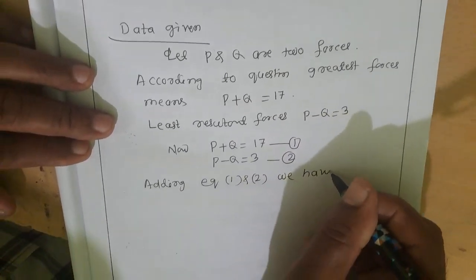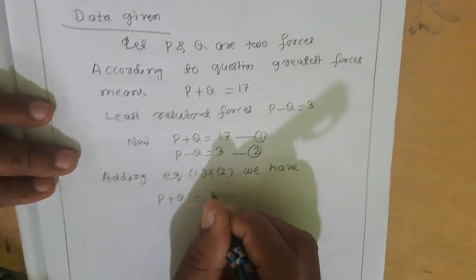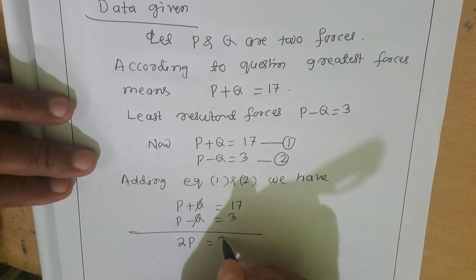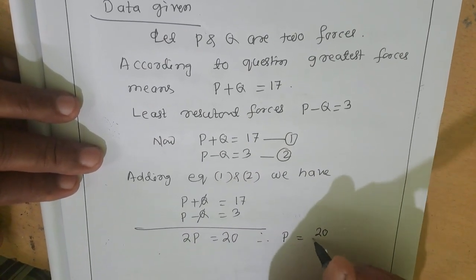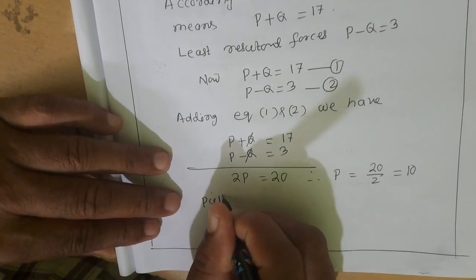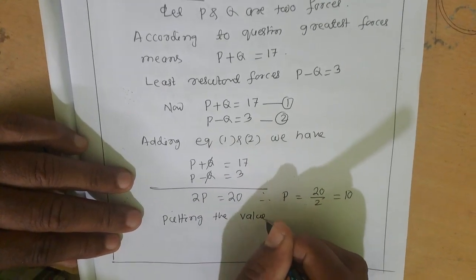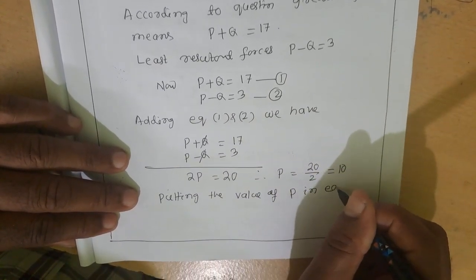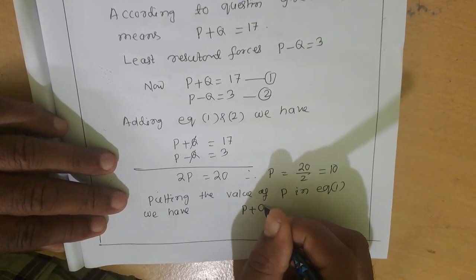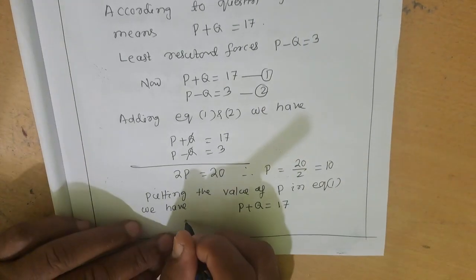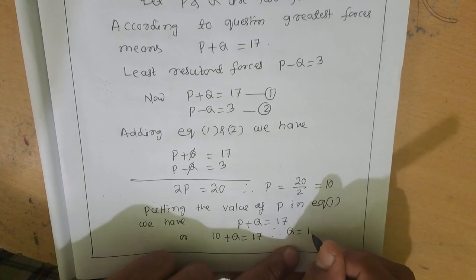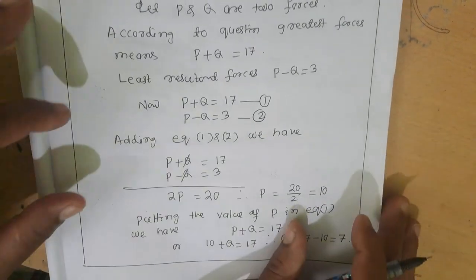Adding equation 1 (P + Q = 17) and equation 2 (P − Q = 3): the Q terms cancel, giving 2P = 20, therefore P = 20/2 = 10. Putting the value of P into equation 1: 10 + Q = 17, therefore Q = 17 − 10 = 7.